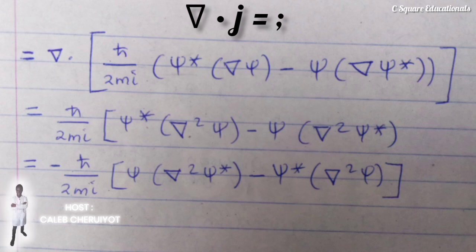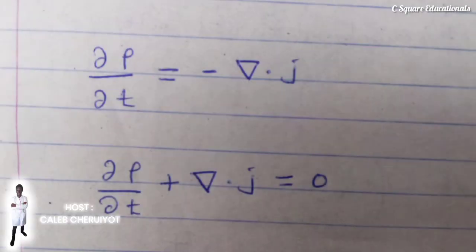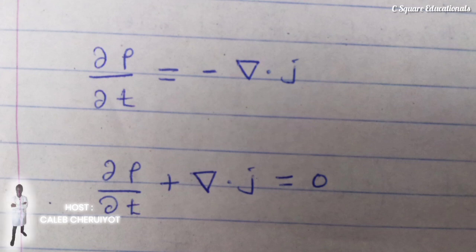The continuity equation is: partial rho over partial t equals negative del dot J, which is equivalently written as partial rho over partial t plus del dot J equals zero. The integral form follows from the general equation.